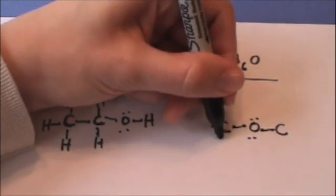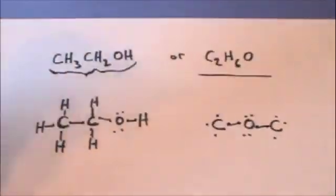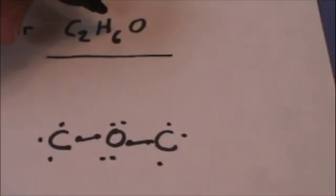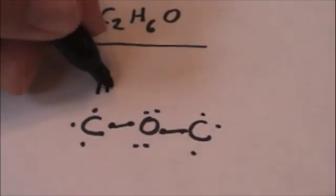And this leaves these carbons with three unpaired valence electrons. And hey, look, we've got six hydrogens. So we can just put our hydrogens